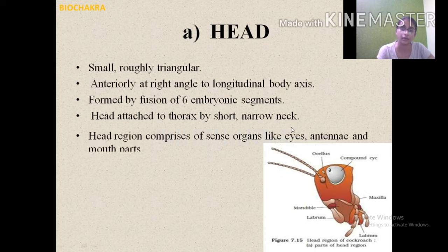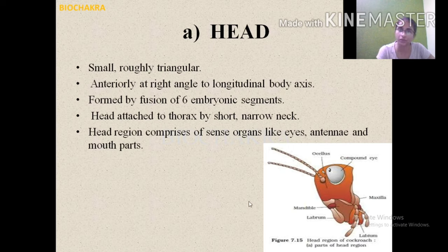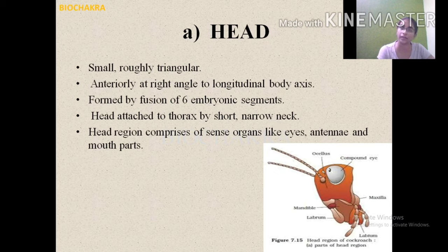So the head has antennae and downward-directed mouthparts. It is roughly triangular, positioned at 90 degrees, formed from 6 embryonic segments, and is attached to the thorax via a neck that provides directionality and flexibility. The head comprises sense organs including the eyes, antennae, and mouthparts. Now we will see each of these in detail — starting with the compound eyes.